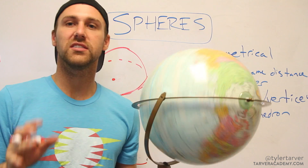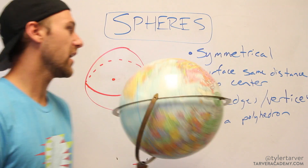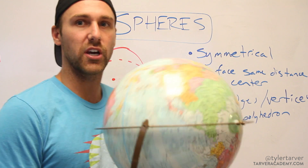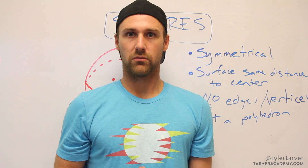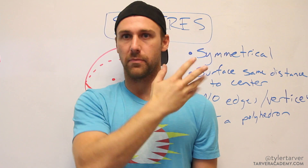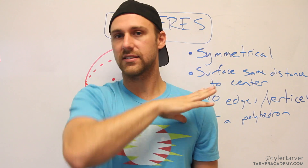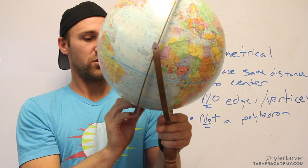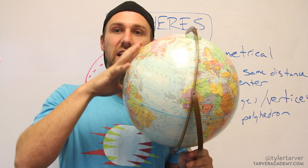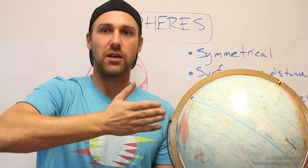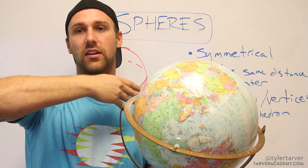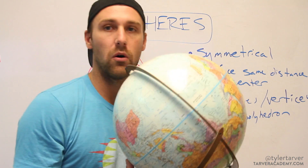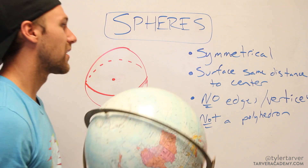Let me hit you with some properties of a sphere. First off, a sphere is symmetrical. That means, like when you look at a person, they're symmetrical — the right side is the same as the left side. If you cut a sphere in half at any point, everything would always be the same on the left and the right. It's a perfectly symmetrical ball.